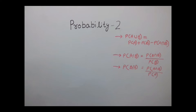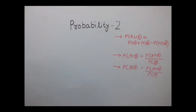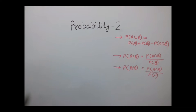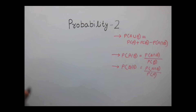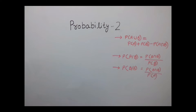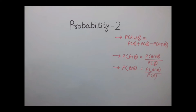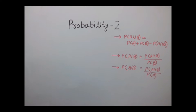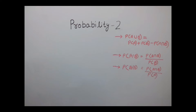Welcome to India Edu tutorials. Welcome to the next class of probability. In our previous class we discussed basic probability, which is the probability of a particular event equal to favorable outcomes divided by total number of outcomes. Here we will be discussing about combination of events.